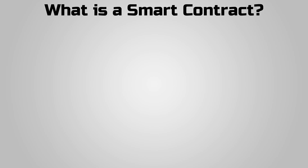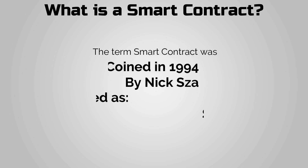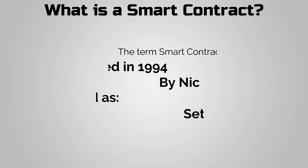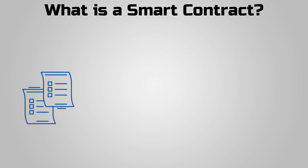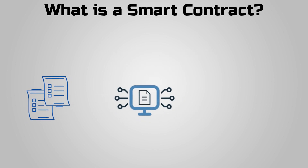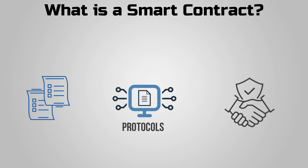What is a smart contract? The term 'smart contracts' was coined in 1994 by Nick Sabo, who defined it as a set of promises specified in digital form, including protocols within which the parties perform on these promises.